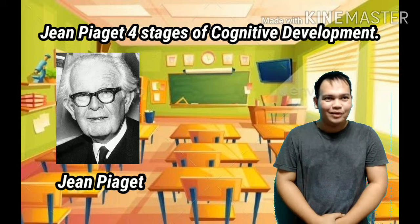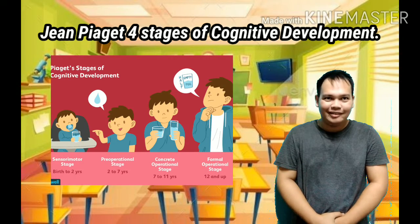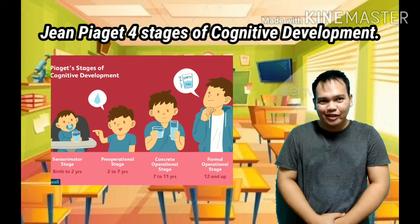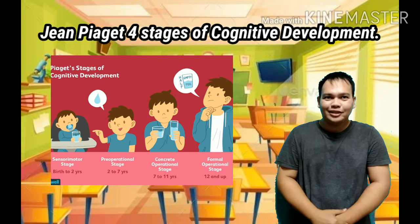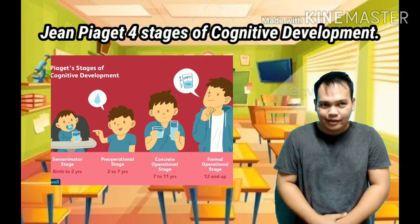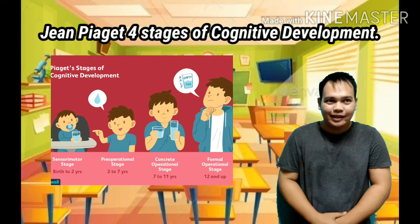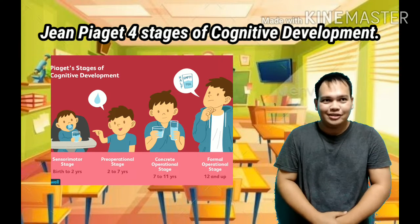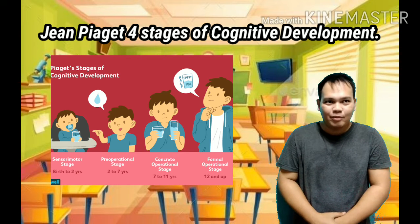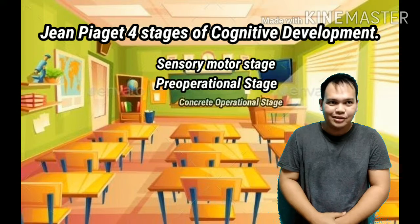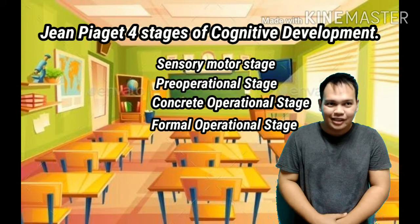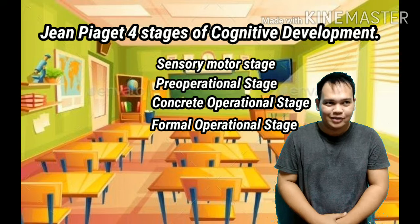Jean Piaget's theory of cognitive development suggested that children move through numerous different stages of mental development. His theory focuses not only on understanding how children acquire knowledge, but also on understanding the nature of intelligence. Piaget's stages of cognitive development are the sensorimotor stage, pre-operational stage, concrete operational stage, and the formal operational stage.